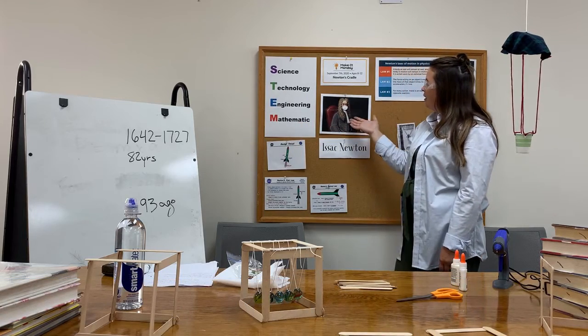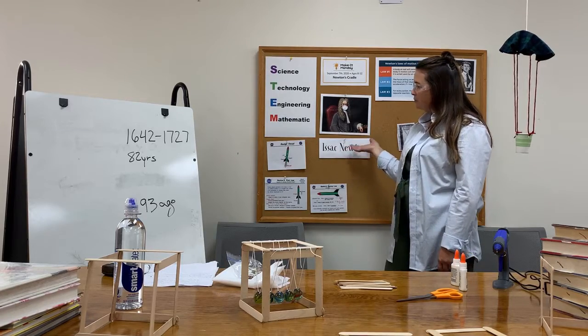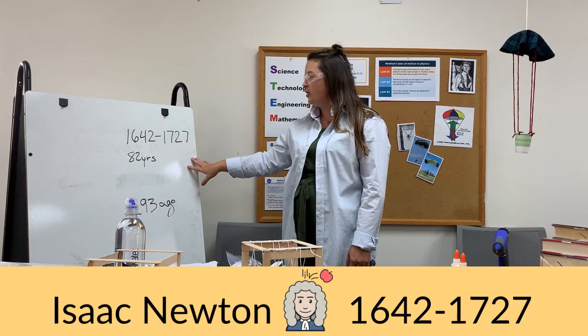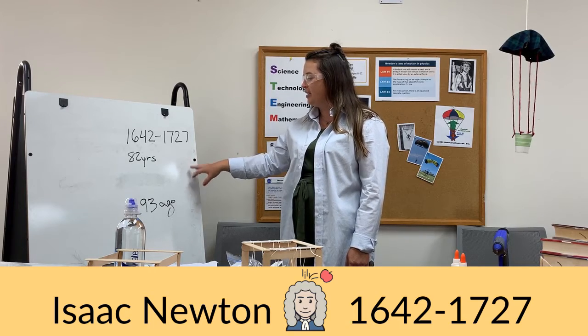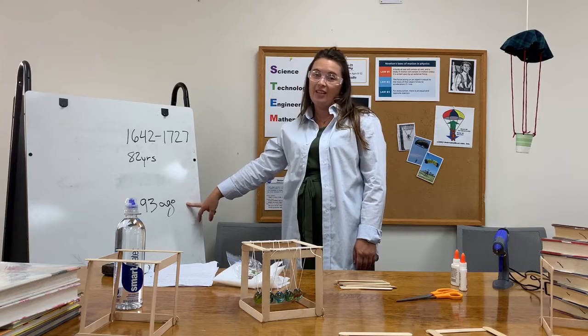And the scientist that we're showcasing today is Isaac Newton. Isaac Newton was born in 1642 and died in 1727. So if he was still alive today, he would be 293 years old.